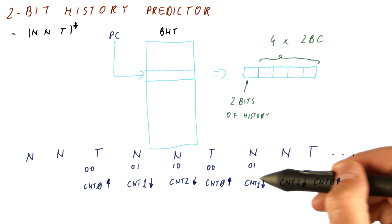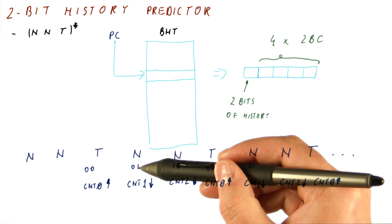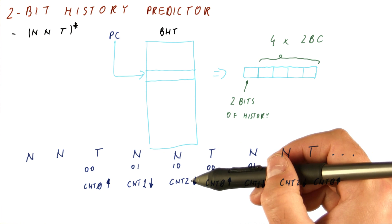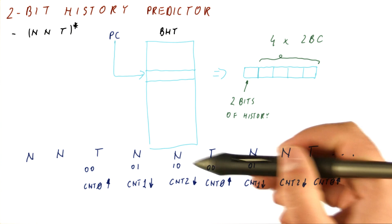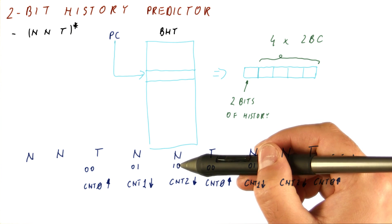Counter 1 keeps counting down. So very soon after seeing a history of 0, 1, we will predict strong not taken. And similarly, counter 2 is always counting down. So very soon we will start predicting not taken when we see a history of 1, 0.